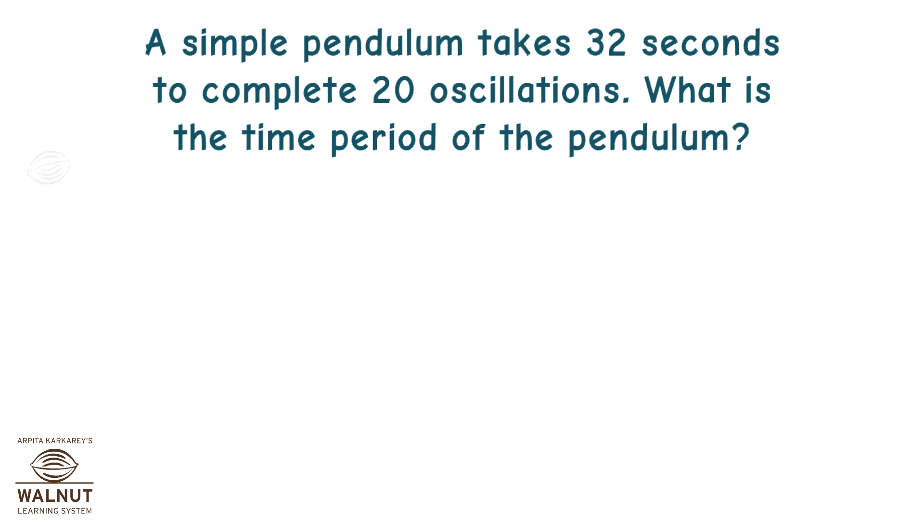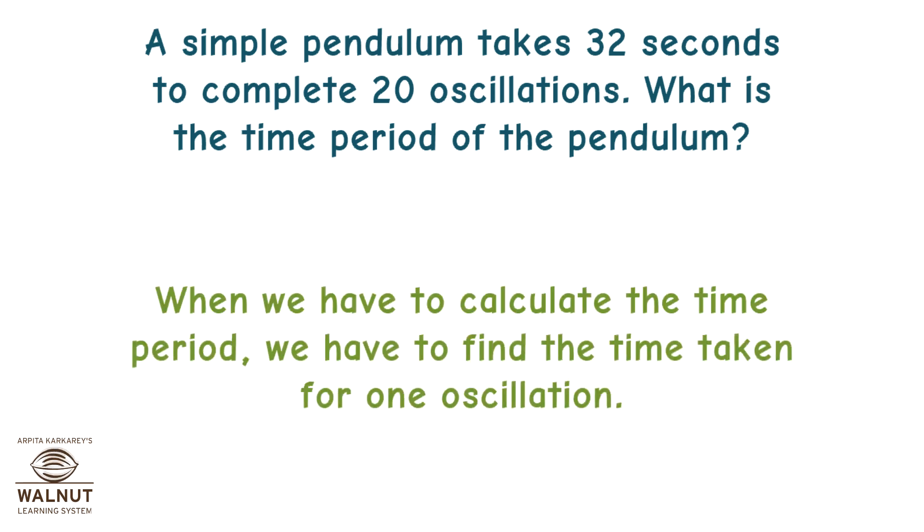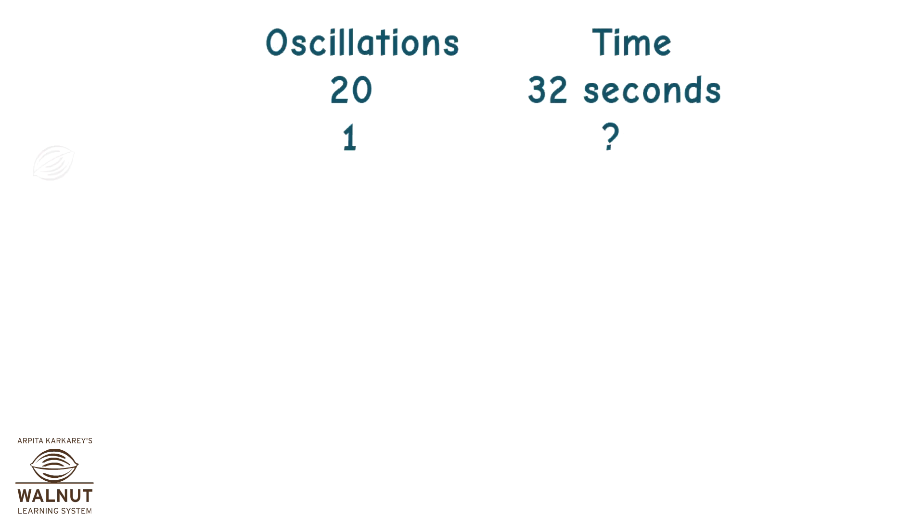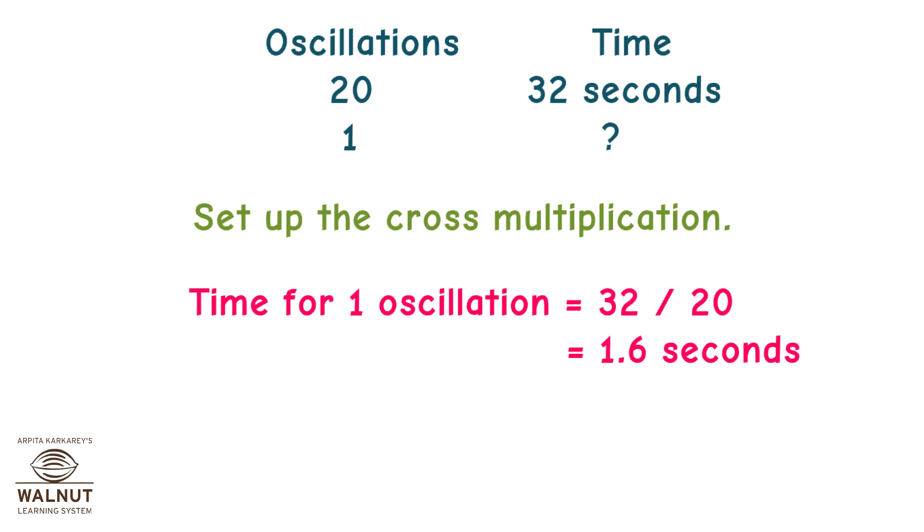A simple pendulum takes 32 seconds to complete 20 oscillations. What is the time period of the pendulum? When we have to calculate the time period, we have to find the time taken for one oscillation. Set up the cross multiplication. Time for one oscillation is equal to 32 divided by 20. Therefore, the time taken for one oscillation is equal to 1.6 seconds. Therefore, the time period of the pendulum is equal to 1.6 seconds.